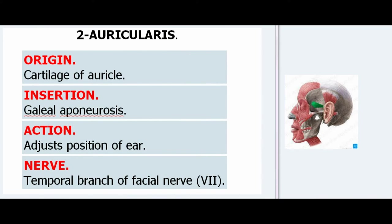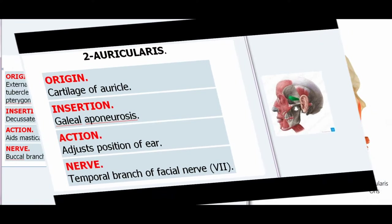2. Auricularis. Origin: Cartilage of auricle. Insertion: Galeal aponeurosis. Action: Adjusts position of ear. Nerve: Temporal branch of facial nerve (VII).